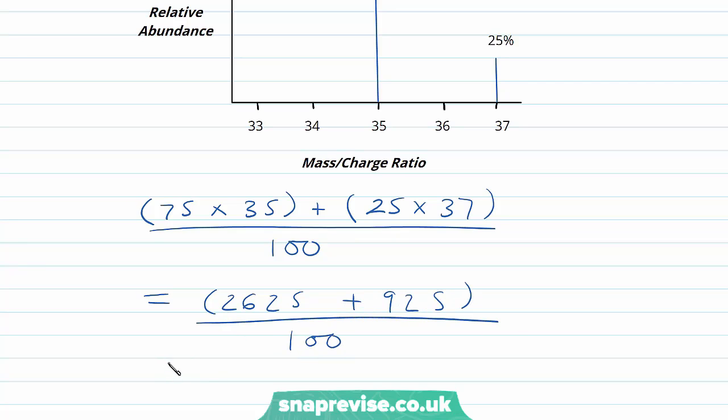And we divide all of that by 100. That will give us 2625 plus 925 over 100 to give us 3550 over 100, give us 35.5. And you can see the figure 35.5 is closer to 35 than it is to 37. That reflects the increased relative abundance of chlorine-35 as opposed to chlorine-37.